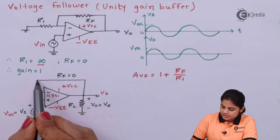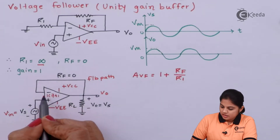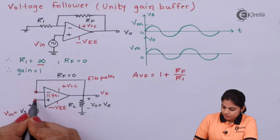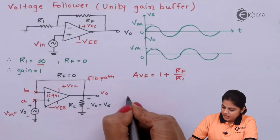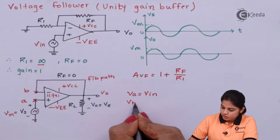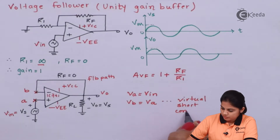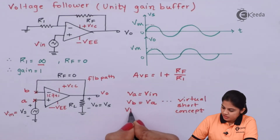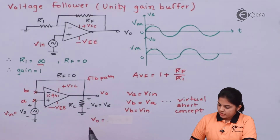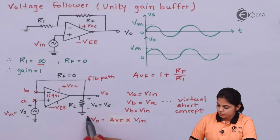This path is nothing but your feedback path. In the feedback path, since we don't have any resistance, by the virtual short concept, if we name the inverting terminal as point A and B — if VA is equal to VIN (the input voltage applied to the non-inverting terminal), then VB should also be equal to VIN by the virtual short concept. So the output voltage V0 can be written as closed-loop voltage gain AVF multiplied by input voltage.